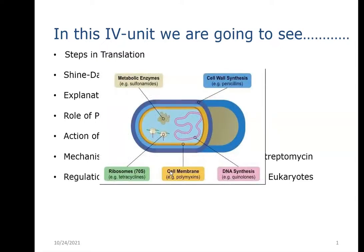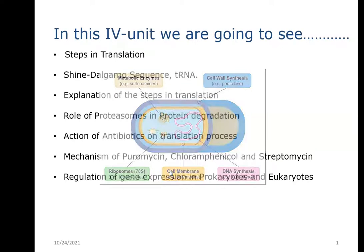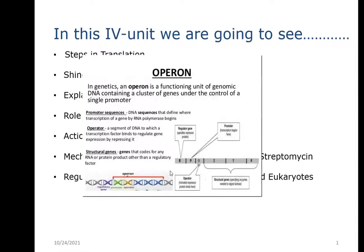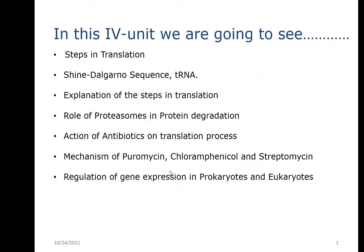Then we are going to see a list of antibiotics and how they affect the translation process. Different kinds of antibiotics are available, and they influence the translation process at different stages. In particular, we are going to see the detailed mechanism of puromycin, chloramphenicol, and streptomycin. The last topic covered in this unit is the operon concept, that is the regulation of gene expression in prokaryotes and eukaryotes, and how it is mediated by operon systems in these organisms.